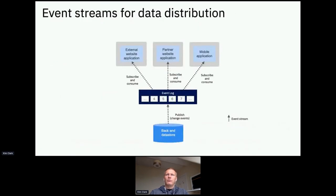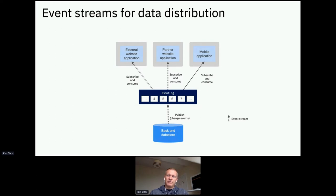Looking at event streams, here's your basic pattern — essentially what Kafka does, taking it as the most predominant example. It has an event log that allows you to place events as they occur in a back-end system, and applications can listen to and subscribe to those topics. That's basic publish-subscribe. You could do this with queues, but you wouldn't end up with an event log — you drain the queues as you subscribe.